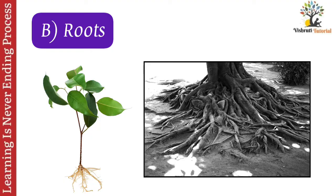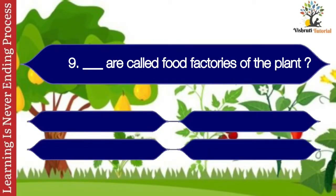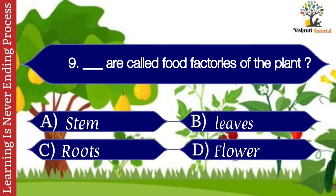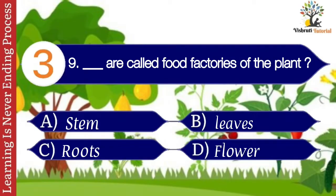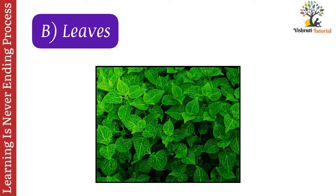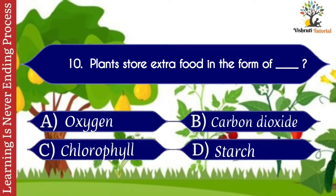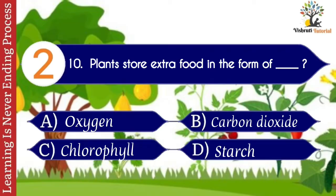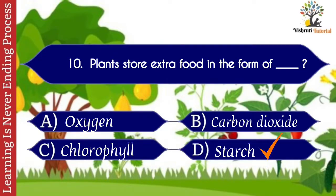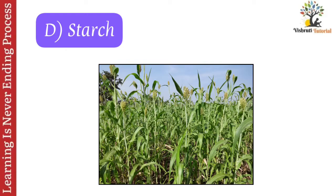Question number nine: dash are called food factories of the plant. Options: A. Stem, B. Leaves, C. Roots, D. Flower. The correct answer is B. Leaves. Leaves are called food factories of a plant. Question number ten: plants store extra food in the form of dash. Options: A. Oxygen, B. Carbon dioxide, C. Chlorophyll, D. Starch. The correct answer is D. Starch. Plants store extra food in the form of starch.